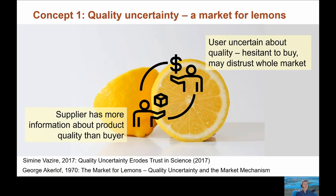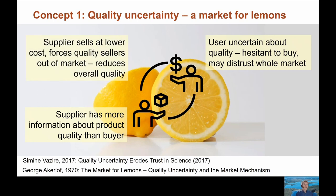This means the buyer is uncertain about the product and may even come to distrust the whole market. While data we provide may be free in an economic sense, the time and resources people invest in using that data isn't — they don't want to waste resources on low quality data. In the market this hesitancy means the seller will have to sell at a lower cost, potentially forcing high quality sellers out and lowering overall quality. Professor Vizier relates this to scientific publishing, where quantity and aesthetic are overwhelming quality and potentially eroding trust in all of science.